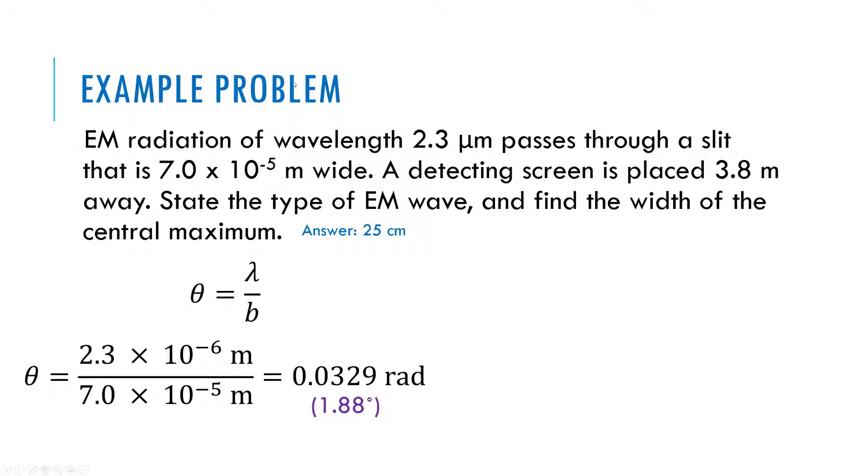If you still don't believe me, go for it. Try it. Put the sine of 0.0329 radians into your calculator in radian mode. And put the tangent of 0.0329 radians into your calculator in radian mode. I bet you get about the same decimal for all those answers.